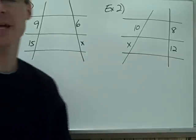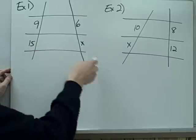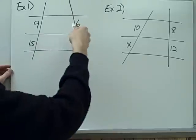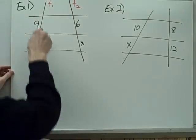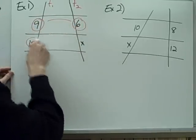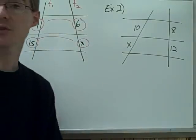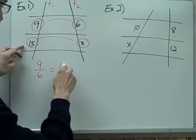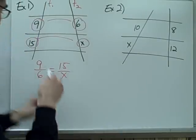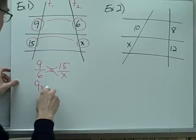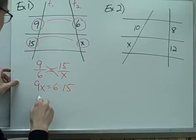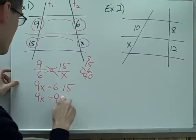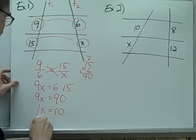Example number 1: solve for x. I have three parallel lines and two transversals — T1 and T2 — with corresponding parts. I set up a proportion: 9 over 15 equals 6 over x. Cross-multiplying gives 9x equals 6 times 15, which is 90. So 9x equals 90; dividing both sides by 9 gives x equals 10.